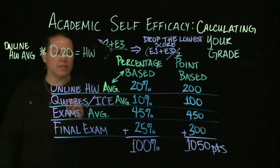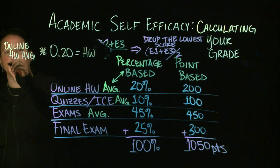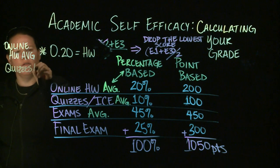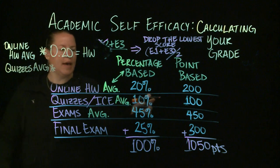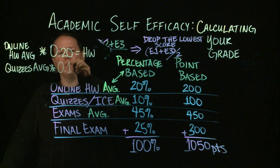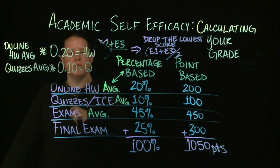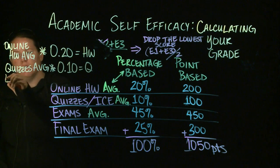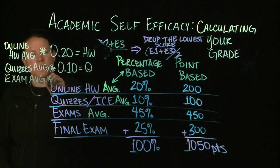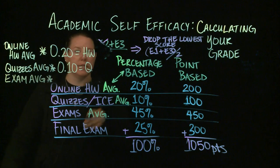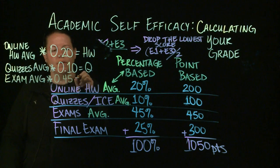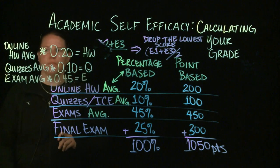You're going to take the quizzes or the in-class exercises, whatever this is. You're going to take the average there as well and multiply that by whatever this percentage is, which is .10. We'll call that Q for quizzes. You would have exams, the exam average, and you're going to multiply that as a percentage, which is .45, and we'll call that E.